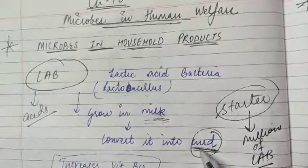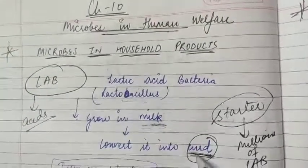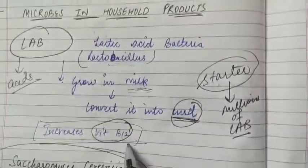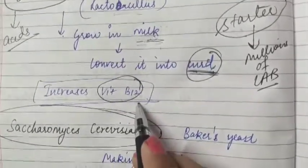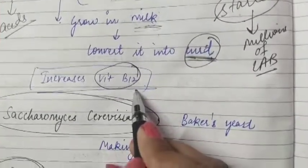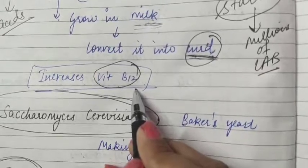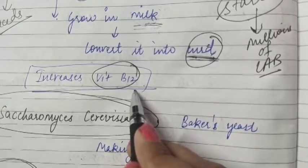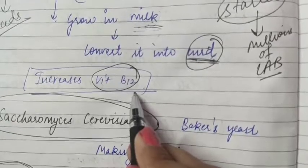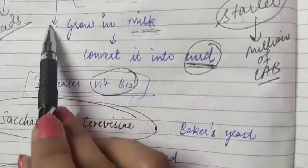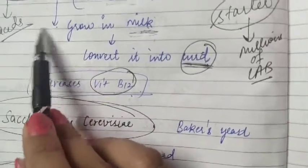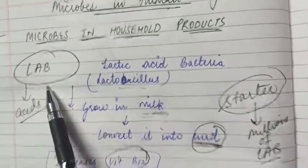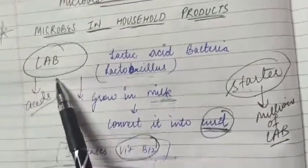Curd also increases our nutritional quality because it increases vitamin B12. In our stomach, LAB plays a beneficial role — it checks our disease-causing microbes. If microbes enter our stomach and cause problems, LAB keeps them in check.